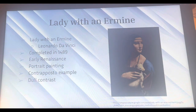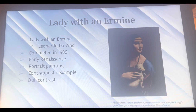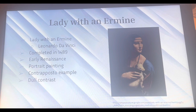Another one is Lady with an Ermine, completed in 1489, which is an example of early Renaissance artwork. This is a portrait painting and also a great example of contrapposto — the figure is not stiff, her torso is turned, and she has her hand on the ermine. This painting also has a dual contrast with darker colors, continuing the theme of dark color contrasts seen in da Vinci's work.